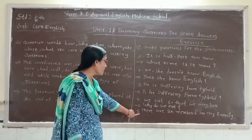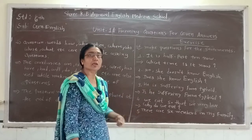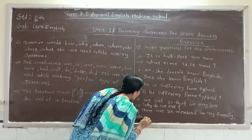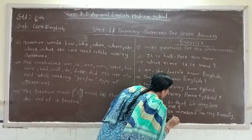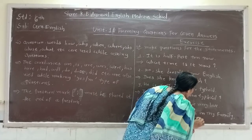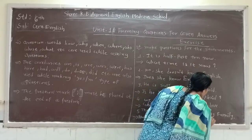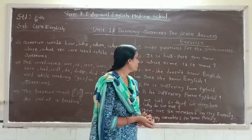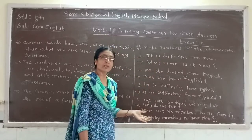Five number: Statement — 'There are six members in my family.' मेरी family में six members हैं। तो इसका question क्या आएगा? How many members are in your family? Answer: There are six members in my family.